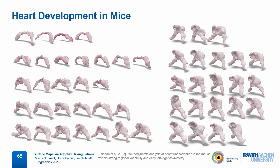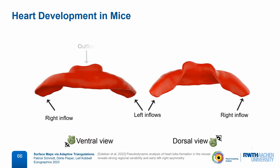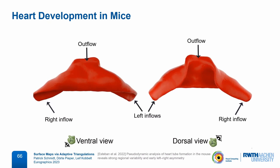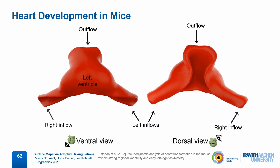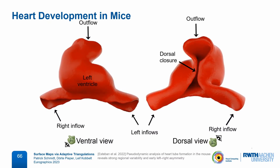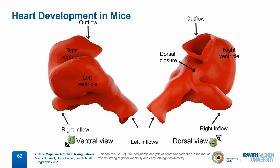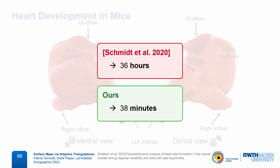We already used this algorithm to speed up an application in developmental biology. In a previous work, we were given a dataset of 51 snapshots of the early mouse heart at different points in time and from different specimens, and the task was to create a time-continuous model of the average growth process by interpolating within this dataset. With our previous mapping algorithm based on overlay meshes, this required computing 50 pairwise maps and took a total of 36 hours. With our new method, we obtain almost the same result but reduced the total runtime to just 38 minutes.